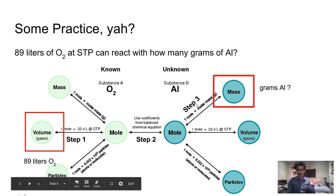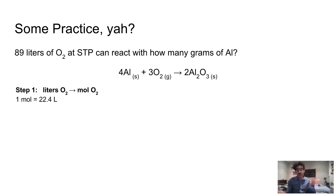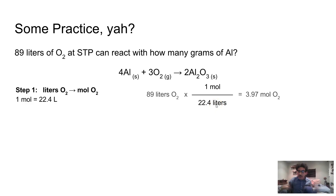Step one, I'm going to be changing from liters of O₂ to moles of O₂ using that conversion factor of one mole equals 22.4 liters. Liters are my old unit — I want to put those in the denominator. Moles are my new unit — I'm going to put one mole in my numerator. I'm going to multiply that by my 89 liters of O₂, so I'll do 89 times 1 divided by 22.4, giving me 3.97 moles of O₂.